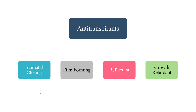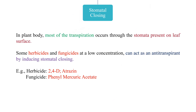The four types are: stomatal closing type, film forming type, reflectant type, and growth retardants. In the plant body, most of the transpiration occurs through the stomatas that are present on the leaf surface.